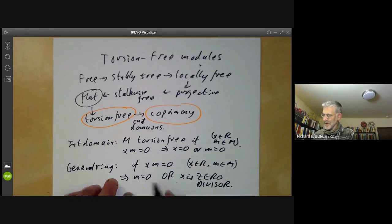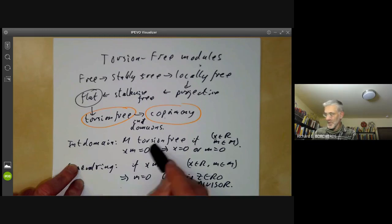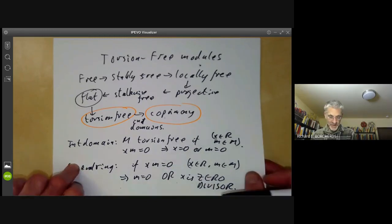The reason for this is that if R has zero divisors, then you discover that with this definition almost nothing is torsion-free. So you don't often use torsion-free modules for general rings. In fact, frankly speaking, you don't often use torsion-free modules even for integral domains.